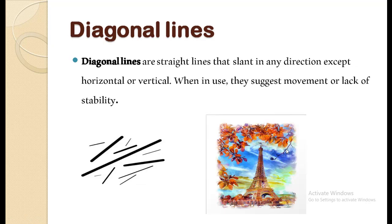Now, come to the next diagonal lines. Diagonal lines are straight lines that slant in any direction except horizontal or vertical. When in use, they suggest movement or lack of stability. You can see on the left corner in the drawing as well.